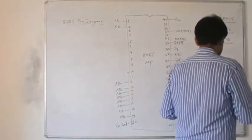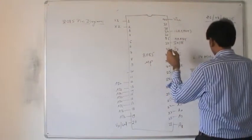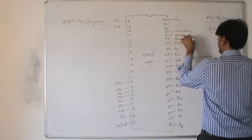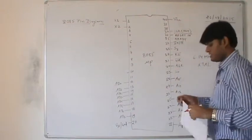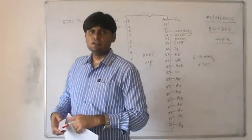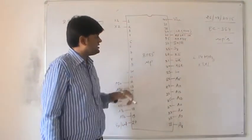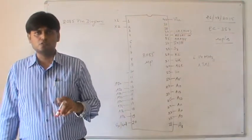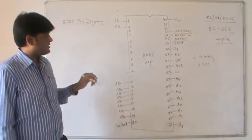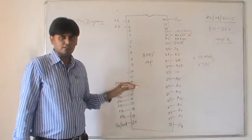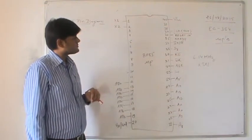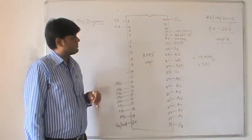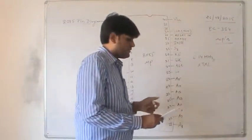To reset the whole system, pin number 36 is RESET IN — an active low signal (indicated by the bar). It resets the 8085 microprocessor; the program counter value becomes 00, so execution restarts from the 0th memory location. By giving a reset signal to pin 36, the CPU is reset.